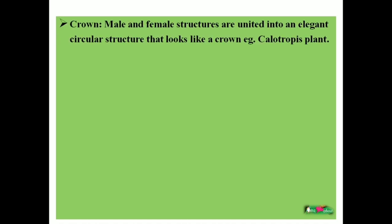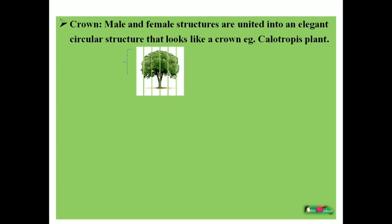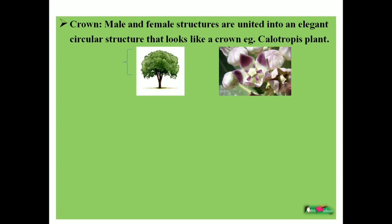Crown — you can read here that male and female structures are united into an elegant circular structure that looks like a crown. But in a general term, crown means the upper part of a plant or tree — from the leaf-emerging area to the top area, that is the crown. If we think about the flower, you can see the picture of the Calotropis flower, where male and female parts stand together — that structure is actually the crown in a flower.